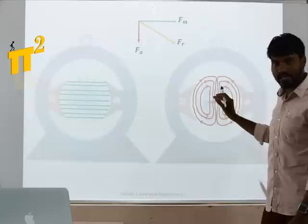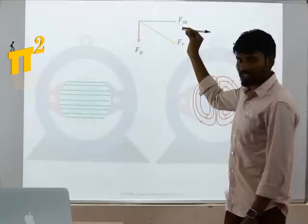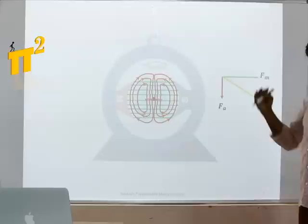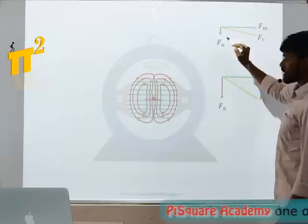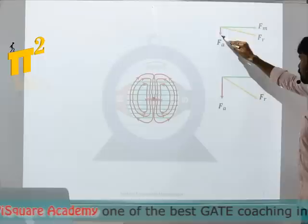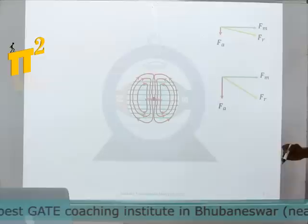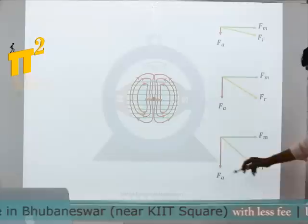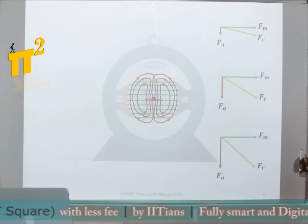Let's see for different values of current: if armature conductors are not carrying any current, FA is zero and only FM is present. If armature conductors carry little current, FA is very small and the cross-magnetizing effect onto the main field flux is very small. If armature conductors carry more current, the cross-magnetizing effect is even more.